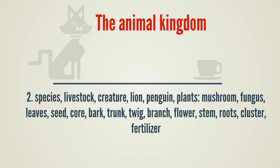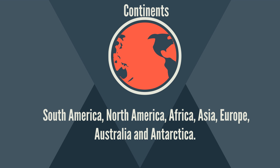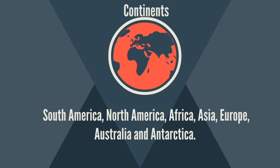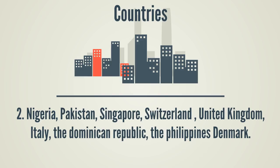Species, Livestock, Creature, Lion, Penguin. Plants: Mushroom, Fungus, Leaves, Seed, Core, Bark, Trunk, Twig, Flower, Stem, Roots, Cluster, Fertilizer. Continents: South America, North America, Africa, Asia, Europe, Australia and Antarctica. Countries: Egypt, Mexico, France, Indonesia, Turkey, England, Germany, China, Greece, Brazil, India, North Korea, Malaysia, New Zealand, Nigeria, Pakistan, Singapore, Switzerland, United Kingdom, Italy, The Dominican Republic.